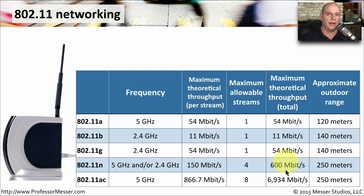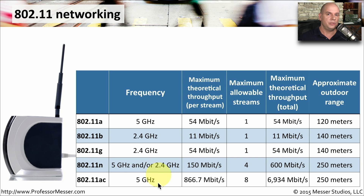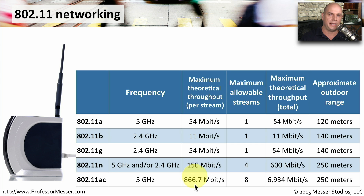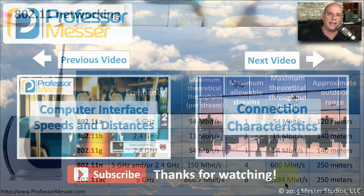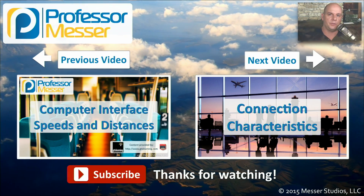One of the latest 802.11 standards, 802.11ac, really raises the bar. It uses 5 gigahertz frequencies exclusively. With eight allowable streams going just over 866 megabits per second each, we can achieve a maximum theoretical throughput that approaches seven gigabits per second.